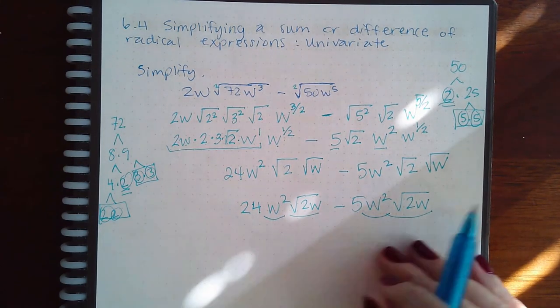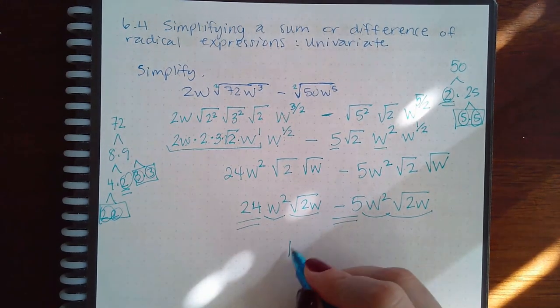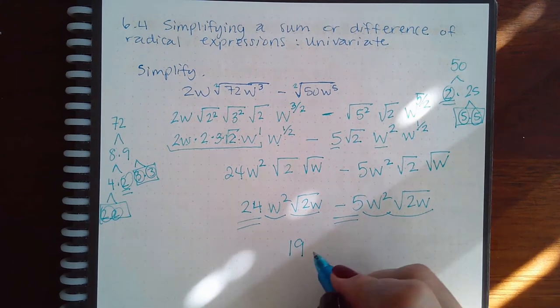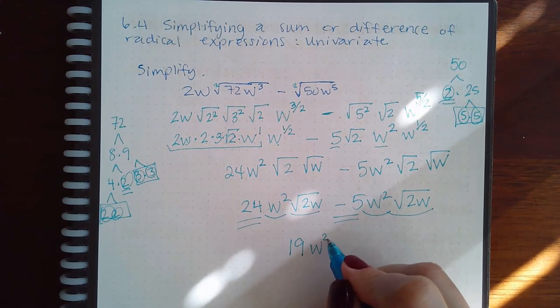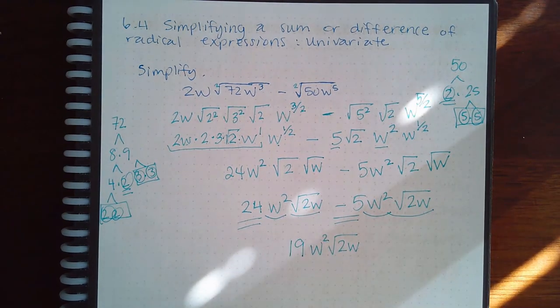So then what? 24 minus 5, that's 19. So I end up with 19w squared square root of 2w. So it's a little bit more complicated as we keep going through these topics.